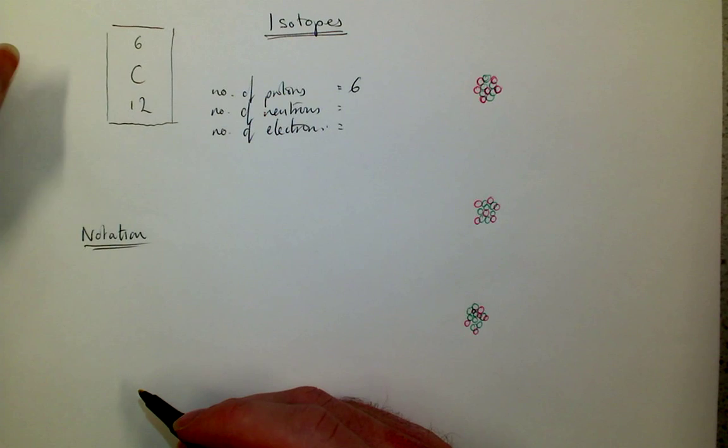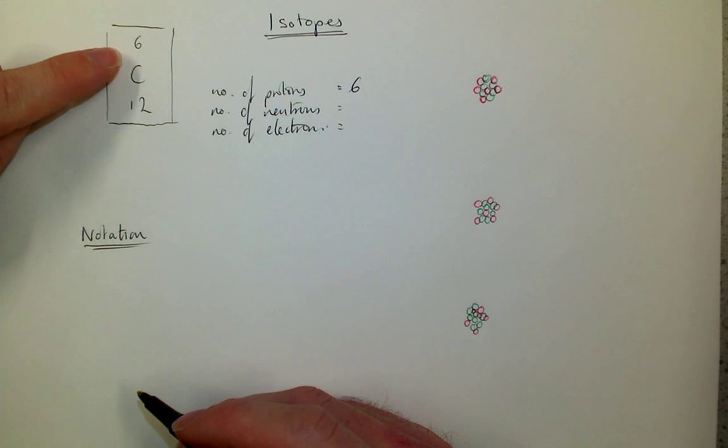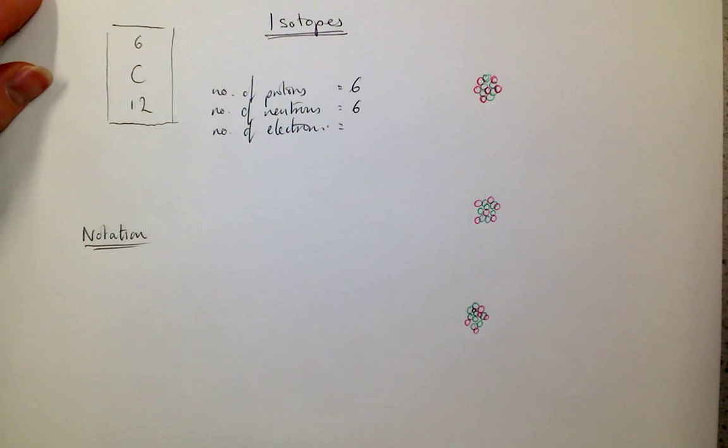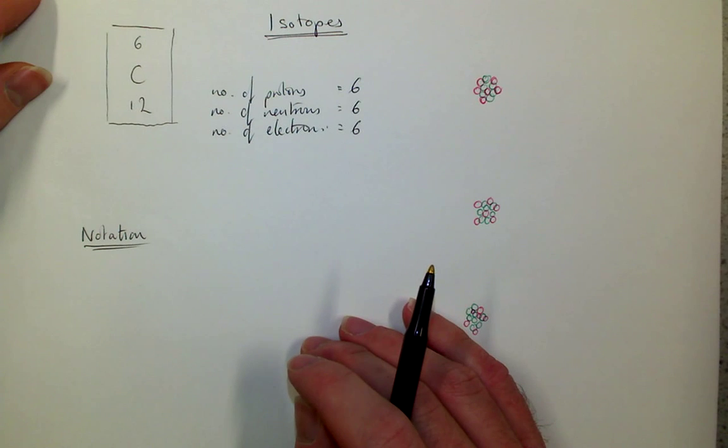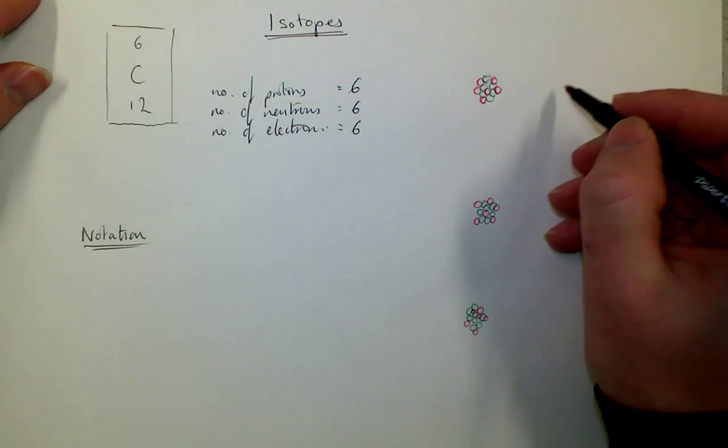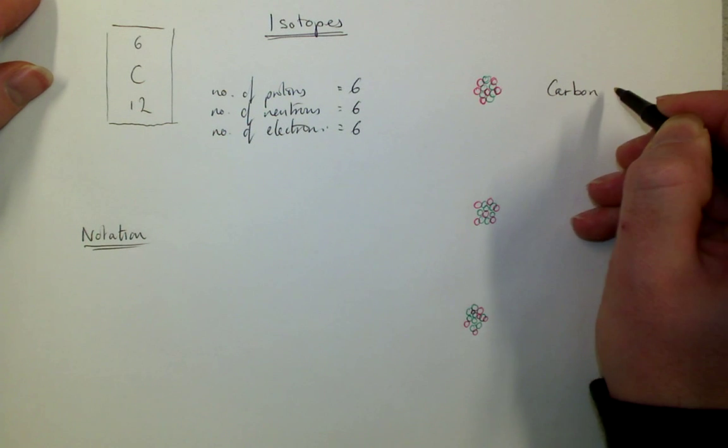In this, the most abundant carbon, there's six protons and 12 take away six neutrons. So six neutrons and six electrons to balance it out. But this is only one isotope of carbon. This is carbon-12.